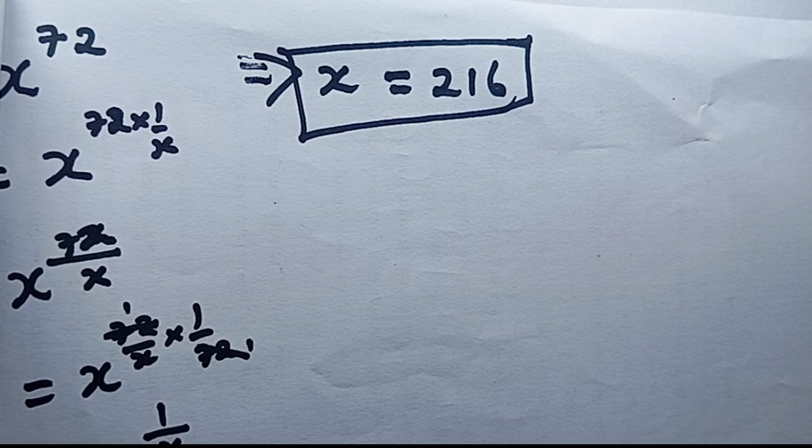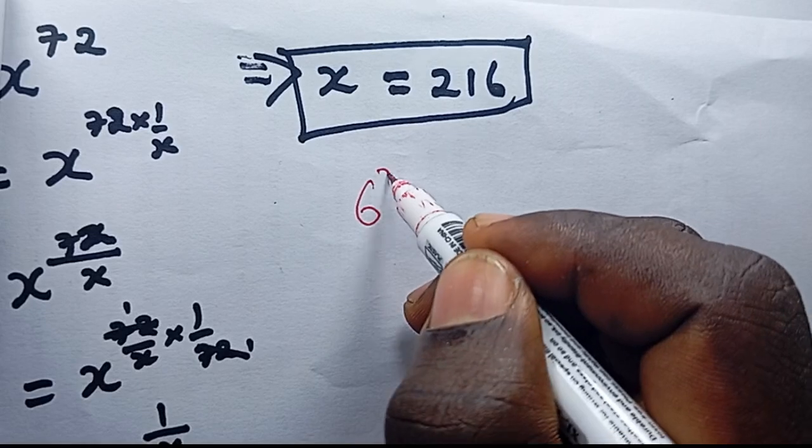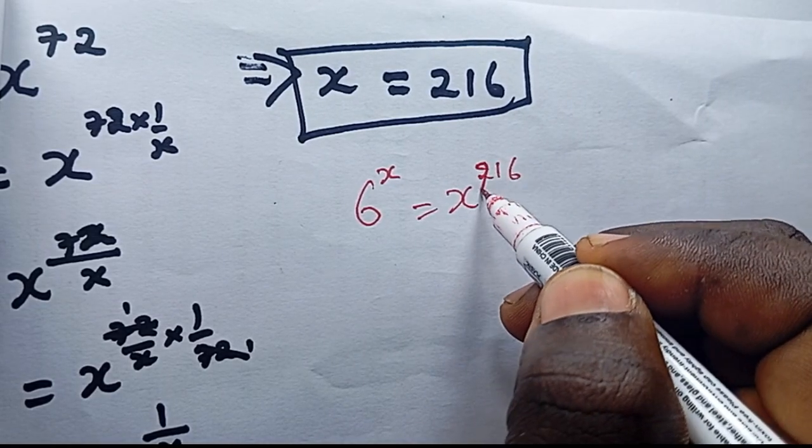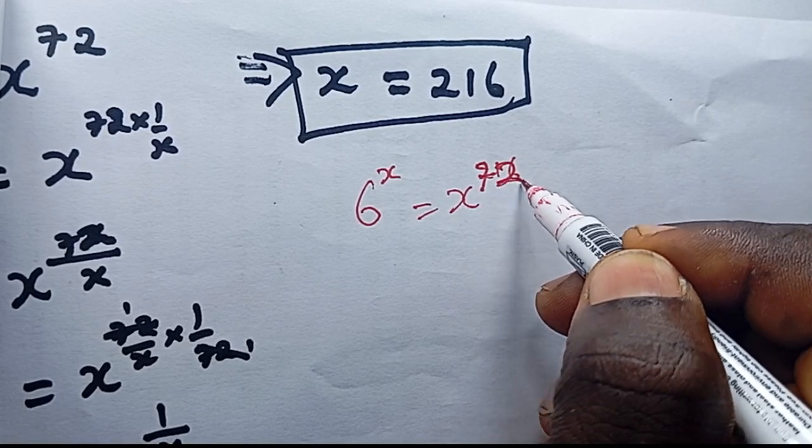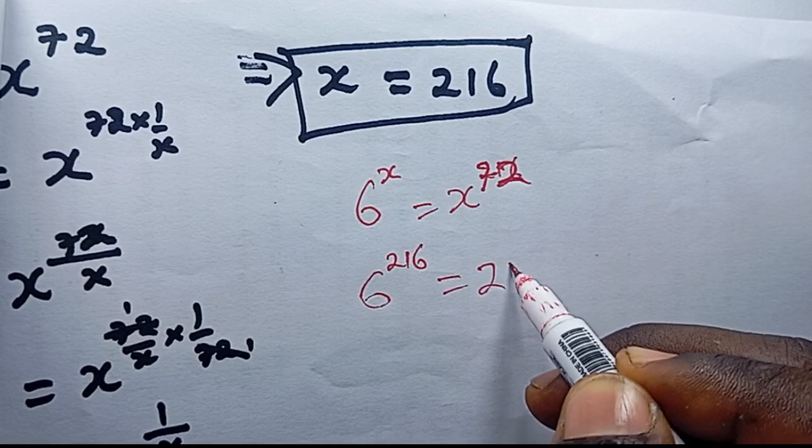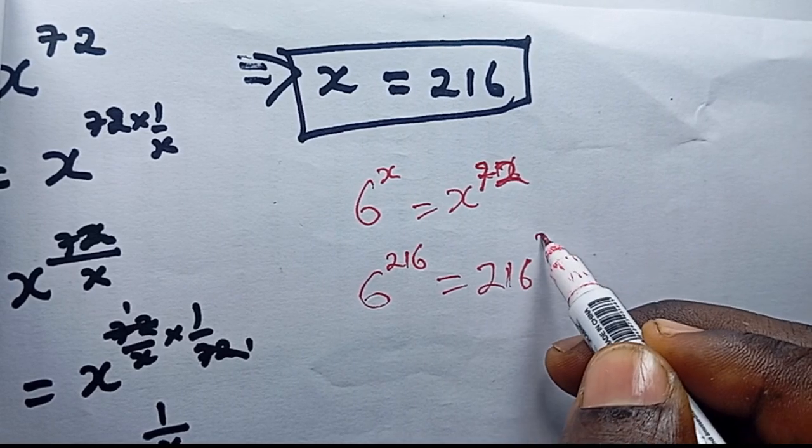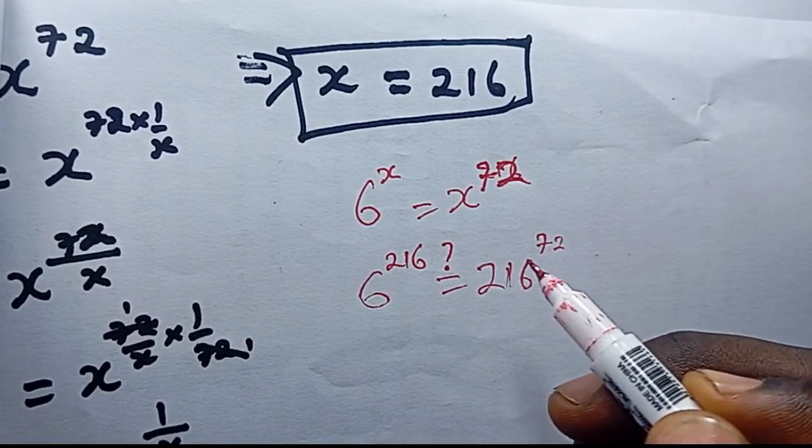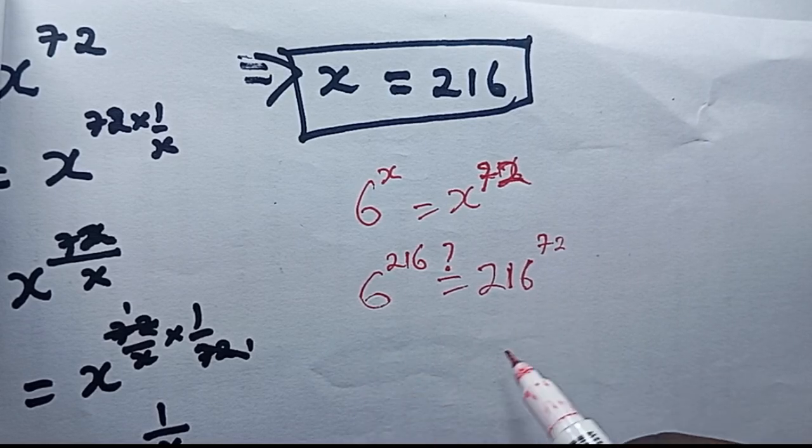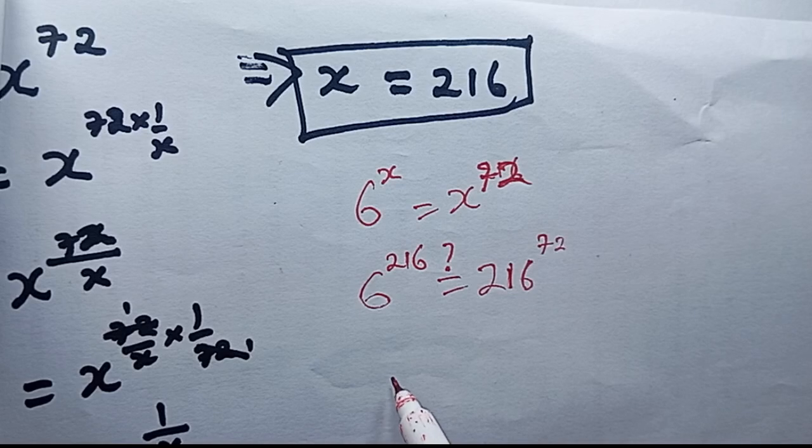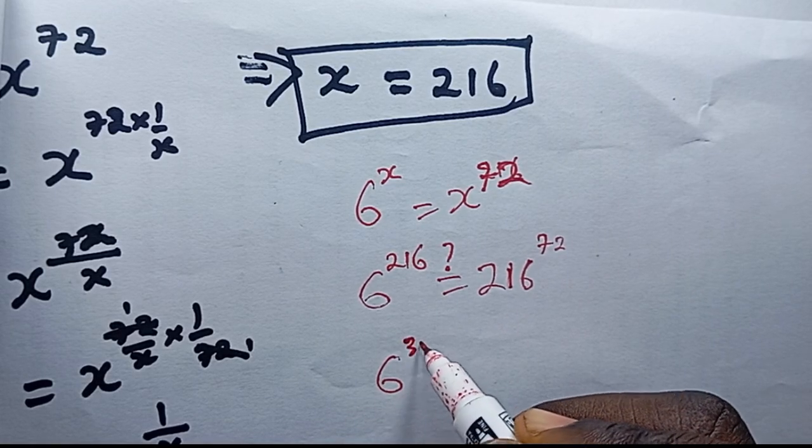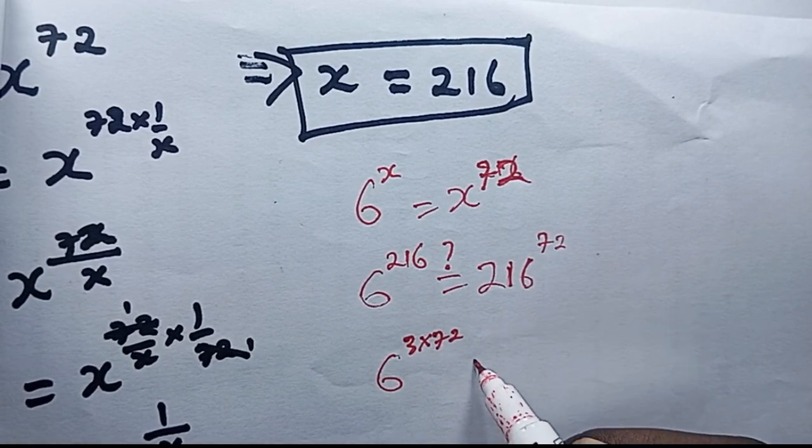What we want to find out is whether x or 216 will satisfy the problem we just solved. We just solved 6 power x is equal to x power 72. Let's put the question back right there and we can simplify.